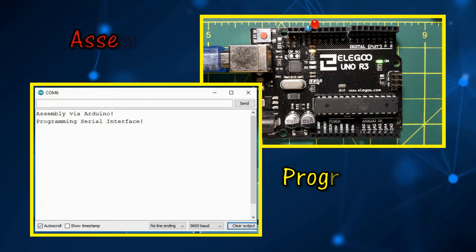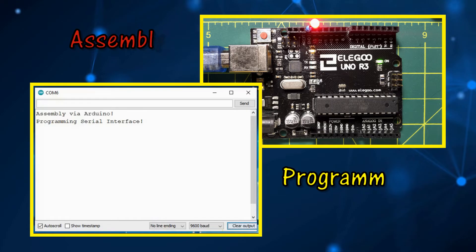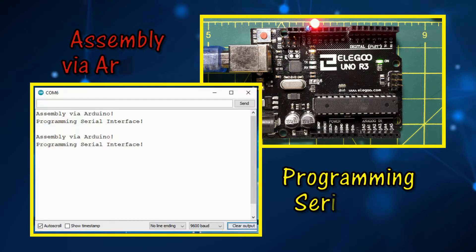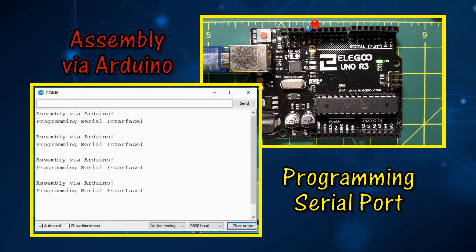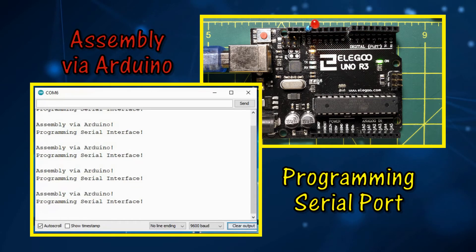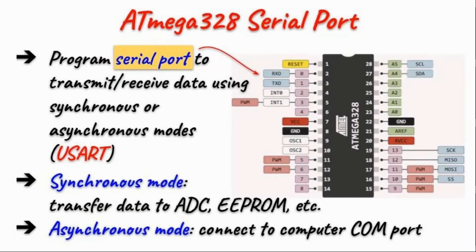This video presents the assembly programming of the ATmega328 serial port to display characters on the Arduino IDE serial monitor. We program the serial port of the ATmega328 in order to transmit or receive data using synchronous or asynchronous modes.